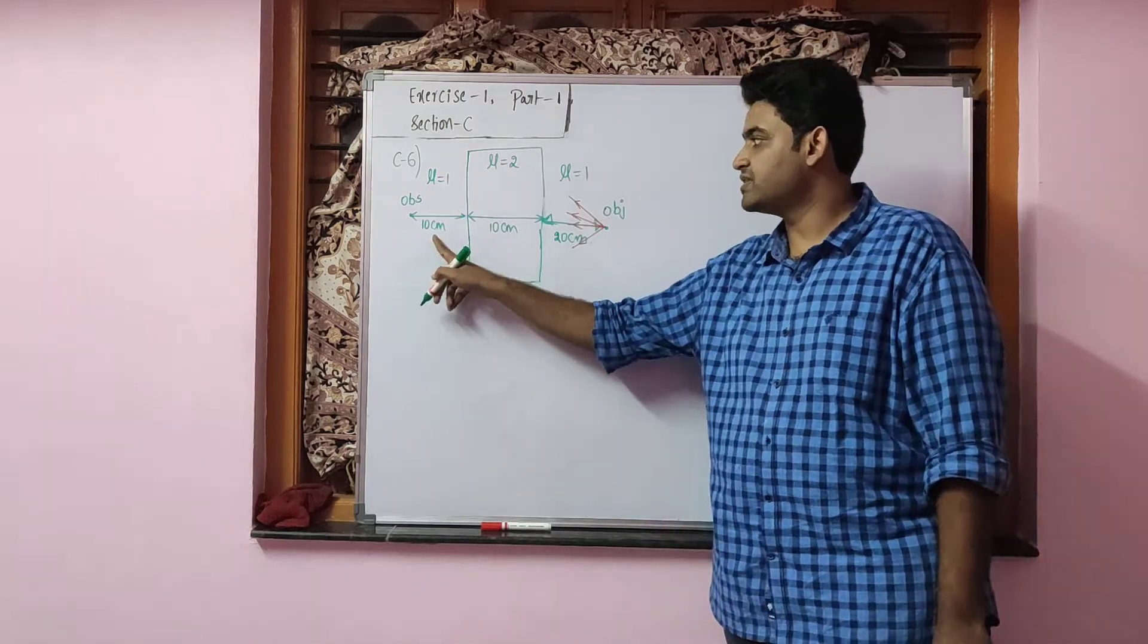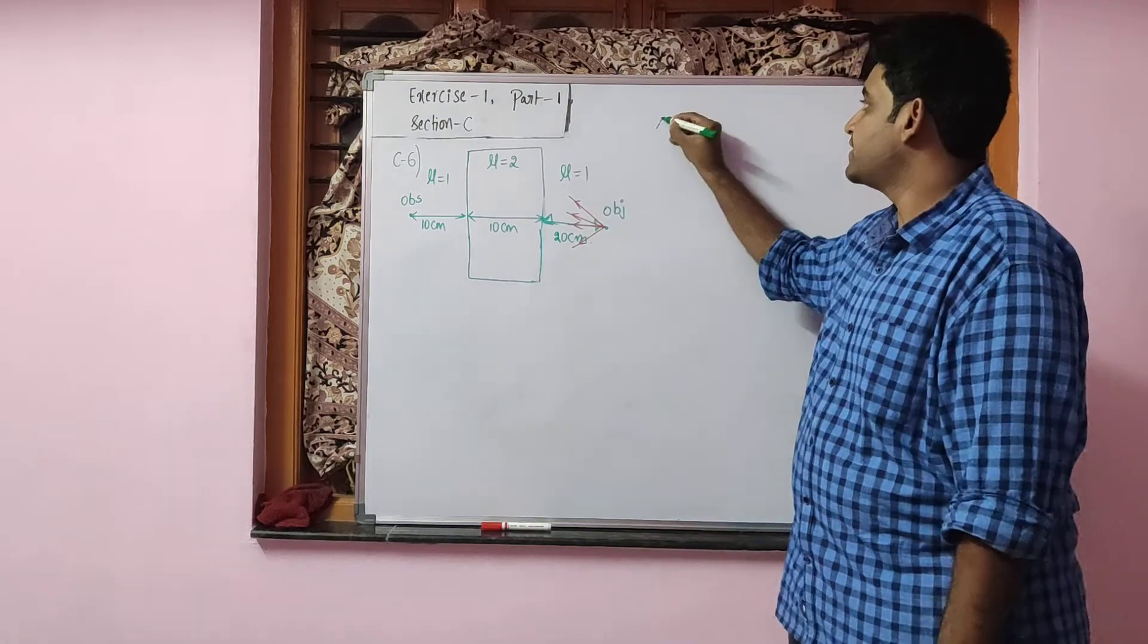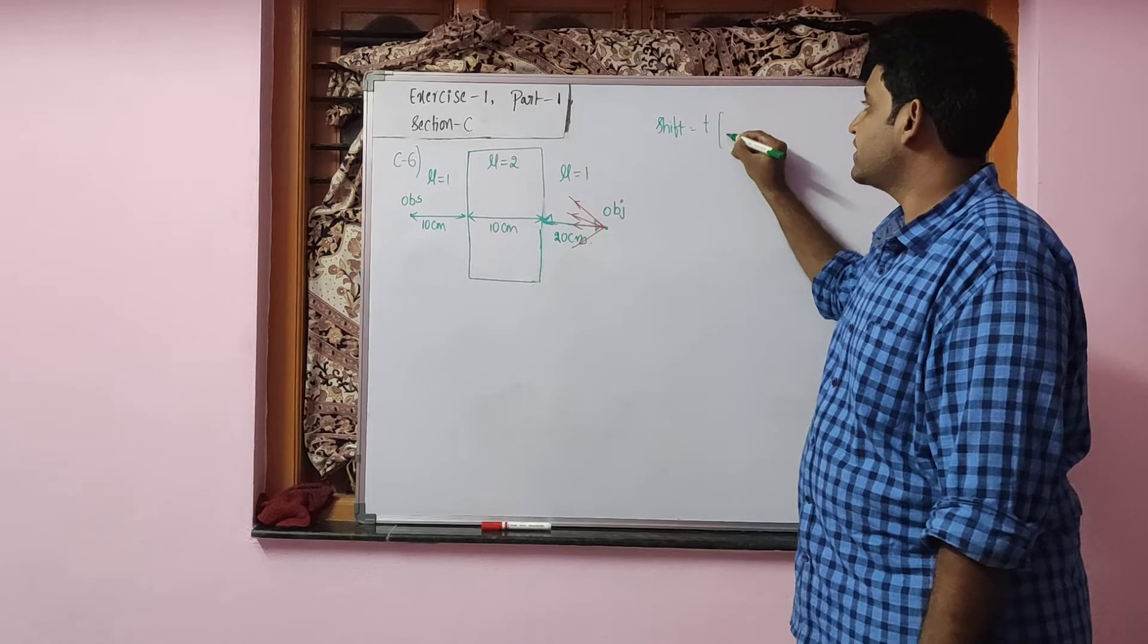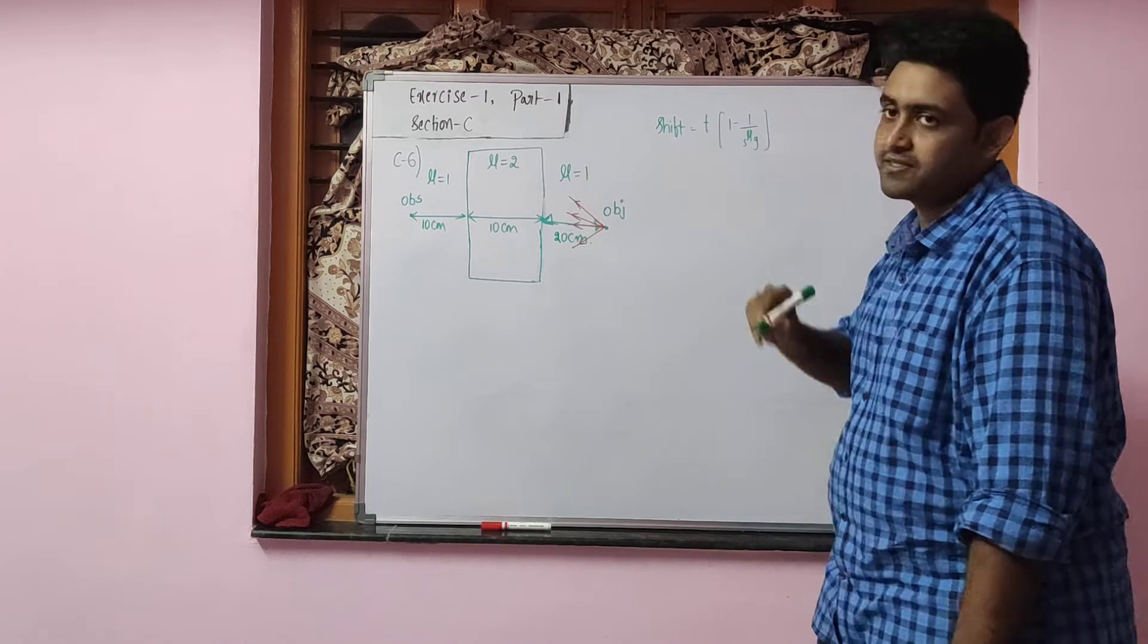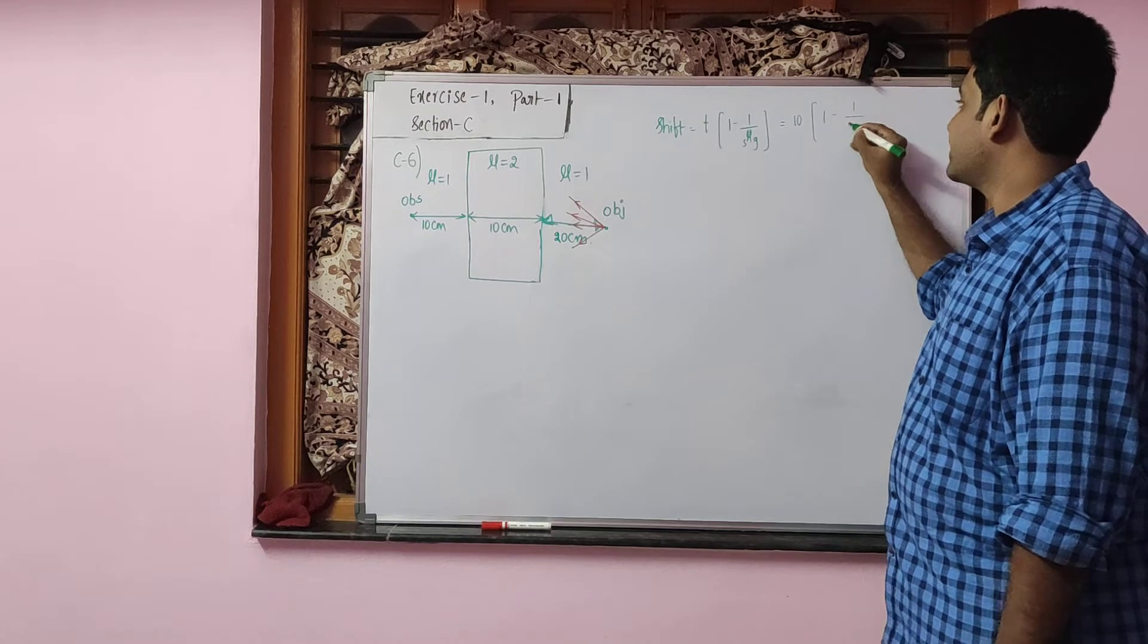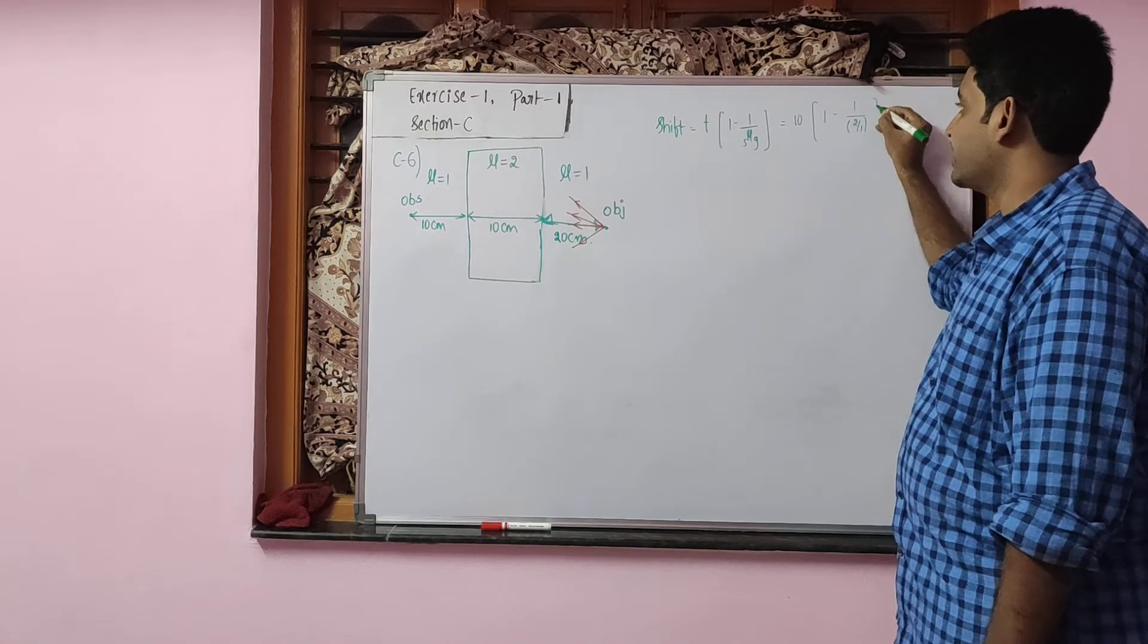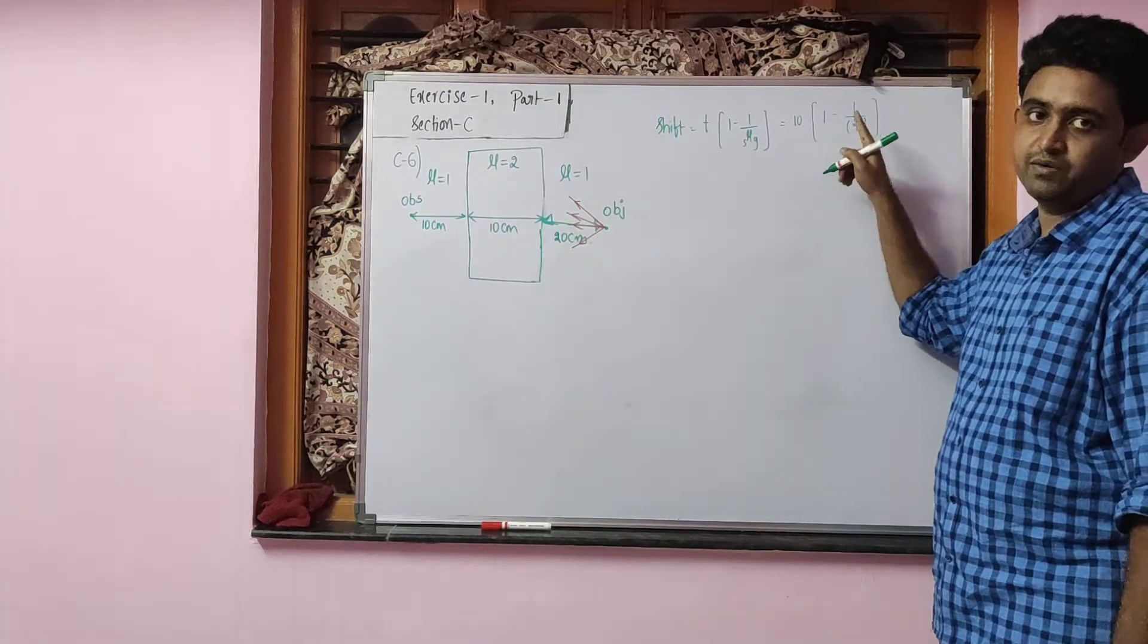You can see the actual distance is 10 plus 10 plus 20, which is 40 cm. The shift created will be the thickness of the glass slab into 1 minus 1 by mu relative, which is 10 into 1 minus 1 by 2 (glass slab refractive index is 2, surrounding refractive index is 1). So this is 1 minus half, which gives 10 into half equals 5 cm.